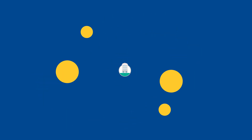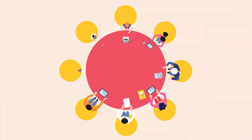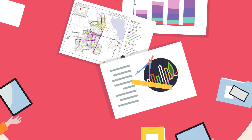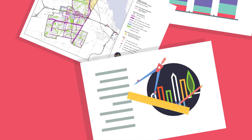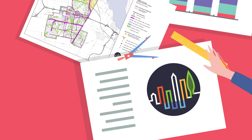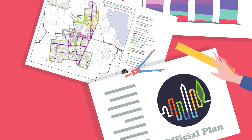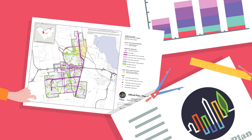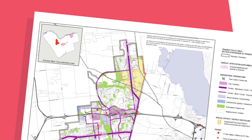It begins with visioning workshops with local stakeholders to create a shared vision for how an area should change, or not, over time. The Planning Act allows municipalities to adopt the CPP system as an alternative to traditional planning tools and processes, provided the local official plan allows for it. The new City of Ottawa Official Plan includes policies allowing Council to adopt the CPP system in the Kanata North Economic District.